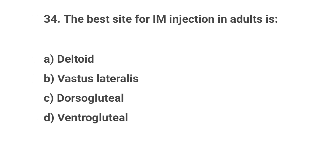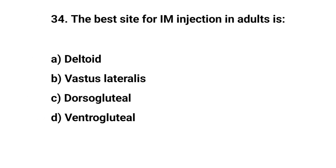Question No. 34. The best site for IM injection in adults is? The right answer is D: Ventrogluteal.